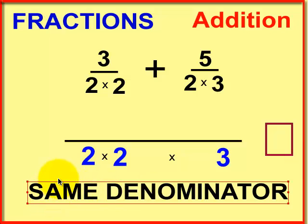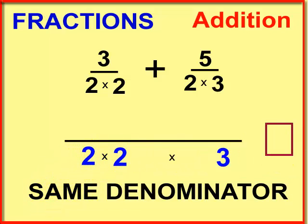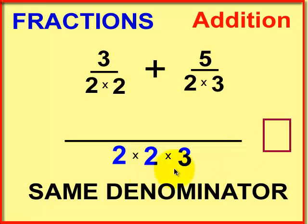So I'm going to put that three down there as a factor. So our new common denominator is two times two times three. Let me clean it up a little bit for you.